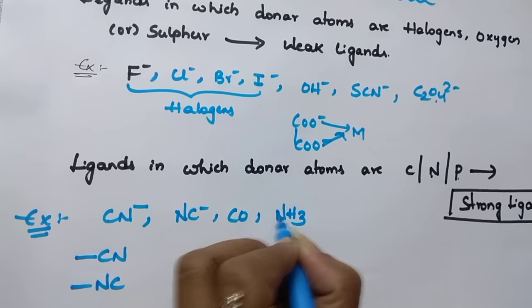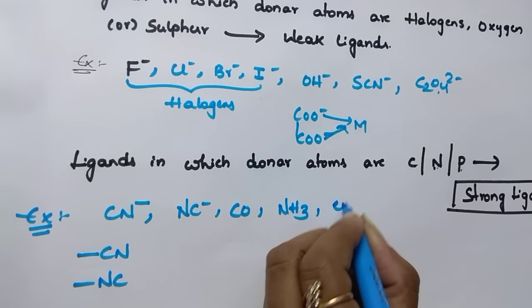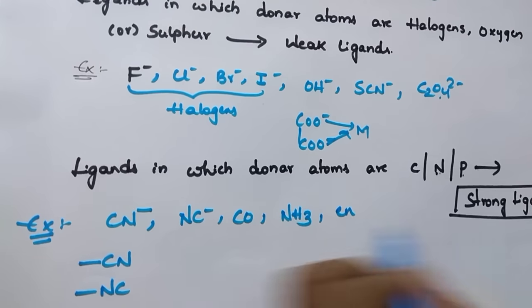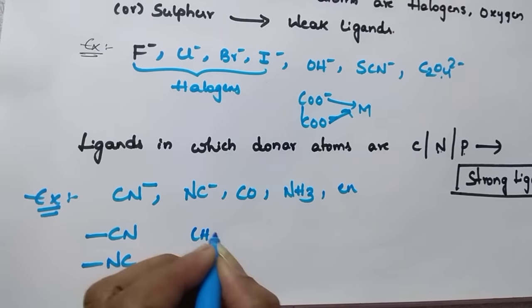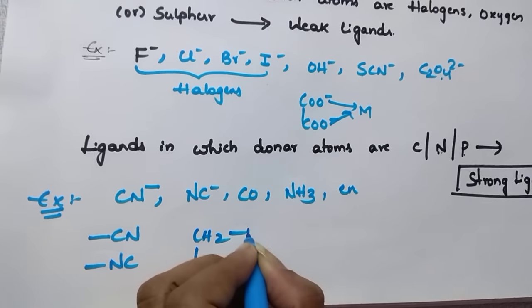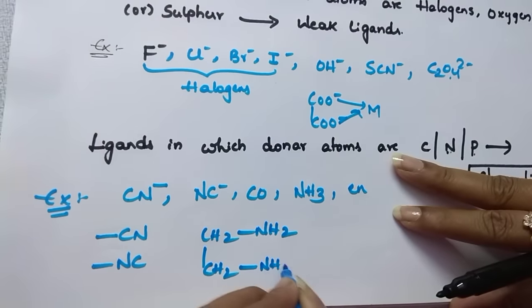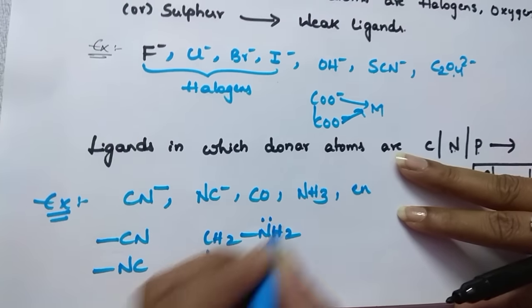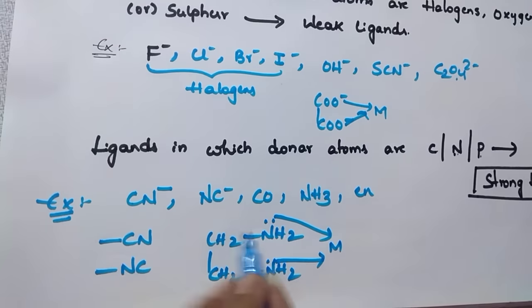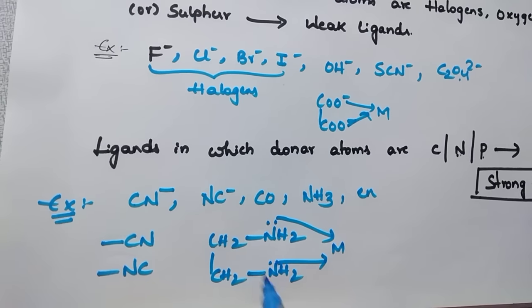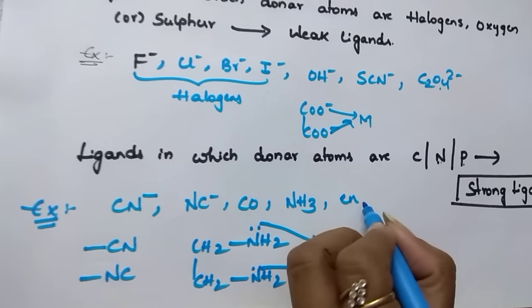Ammonia — nitrogen is the donor, so it is a strong field ligand. Ethylenediamine (ethane-1,2-diamine) has the structure CH₂CH₂NH₂NH₂. Nitrogen is the donor — this lone pair donates to the metal and forms a bond. It is a bidentate ligand, and since the donor is nitrogen, it is a strong field ligand.